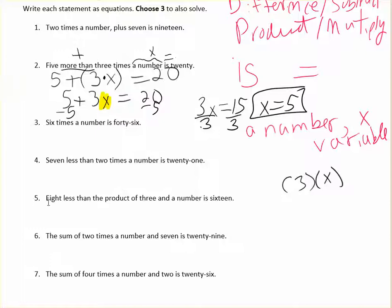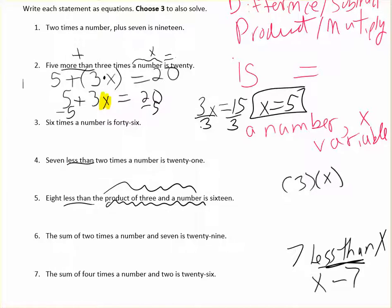Let's look at number five because less than, number four and five both have the phrase less than. Less than, like if it's seven less than x means x minus seven. You have to flip the order when it's less than. So in number five, eight less than the product of three in a number. We need to figure out this part first. The product of three in a number, product means multiply. So that's three, I'll use n this time.